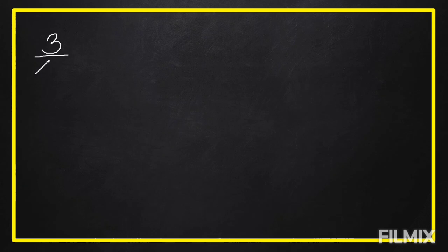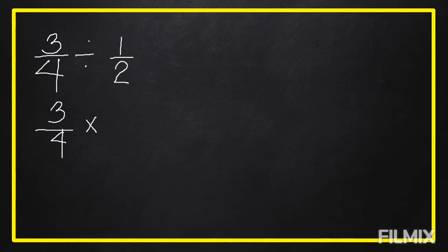To understand our steps, let's try to answer some examples. Number one: three-fourths divided by one-half. To get the quotient of these two fractions, our rule says we're going to get the reciprocal of the divisor and proceed to multiplication. Three-fourths is the dividend and one-half is the divisor, so we're going to get the reciprocal of one-half.